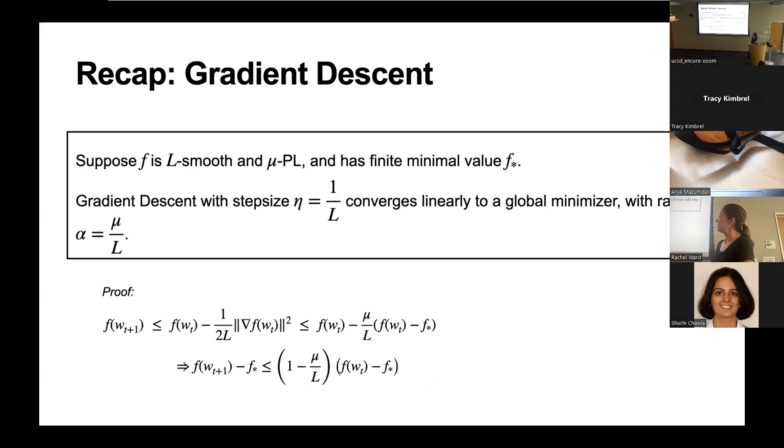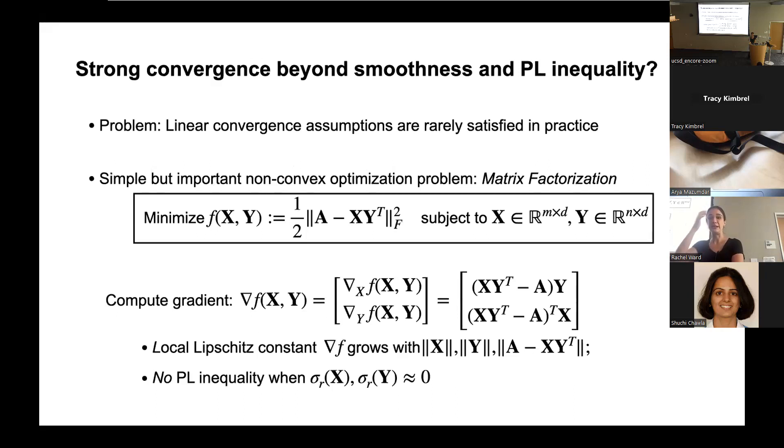So recap. If a loss function is L smooth and mu PL and has a finite minimal value f*, then gradient descent with a step size of 1 over L converges linearly to a global minimizer of the loss function at a linear convergence rate of mu over L. The larger the condition number, the slower the convergence. But the proof is two lines. This is a backbone of the theory for gradient descent.